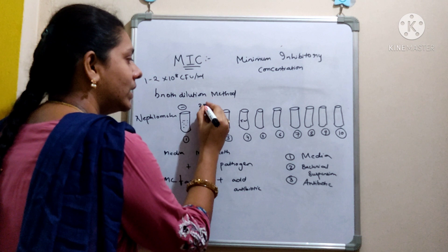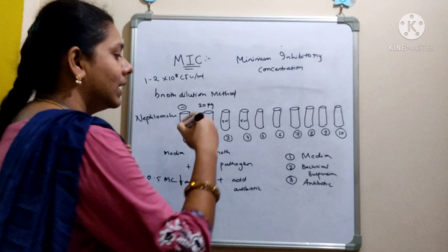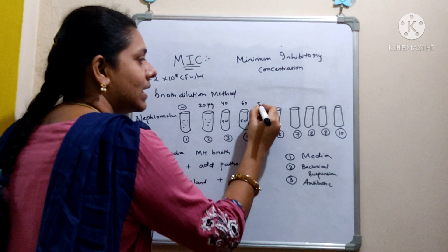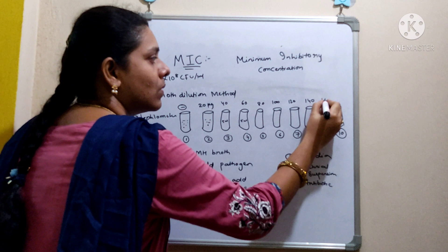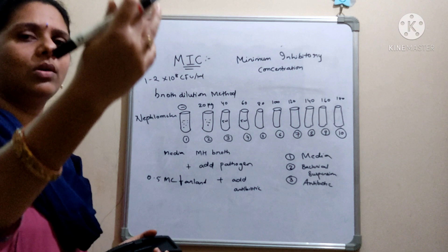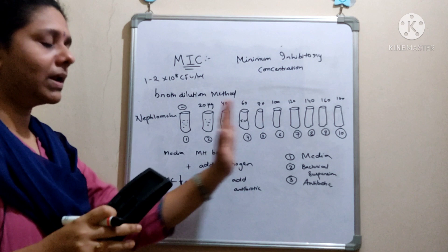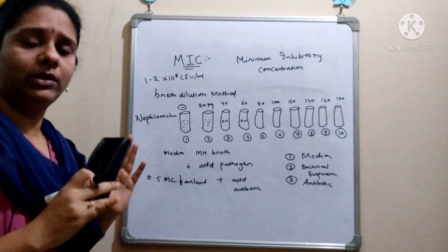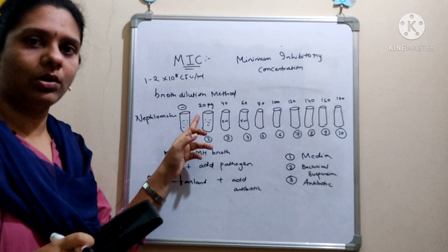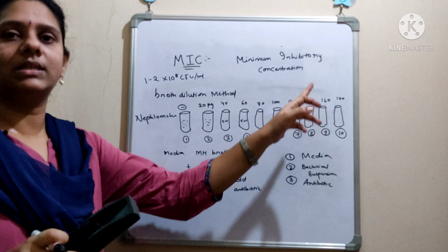Coming to the second test tube, add 20 µg of antibiotic. Then the next tubes get 40, 60, 80, 100, 120, 140, 160, 180, 200 µg, and so on. You can include more test tubes if you want to increase the concentration range. So the first tube has no antibiotic, the second has 20 µg, and concentrations increase up to 200 µg.